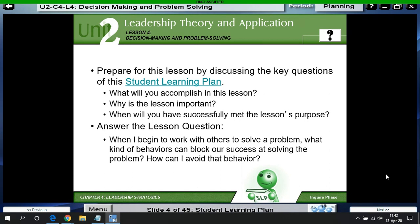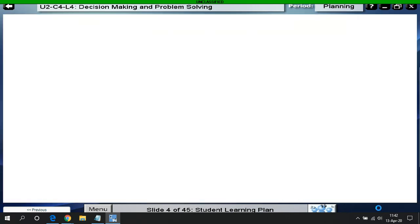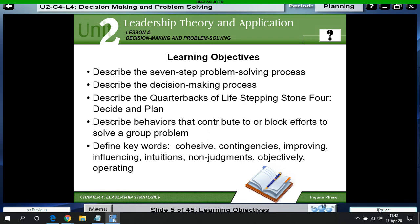Student learning plan is next. These are the learning objectives. Pay particular attention to the seven-step problem-solving process. Think about behaviors that contribute or block efforts to solve a group problem. And look at these key terms down here. Contingencies, I know we have discussed. Cohesive, improving, influencing, intuitions, non-judgment, objectively, and operating are the other key terms.